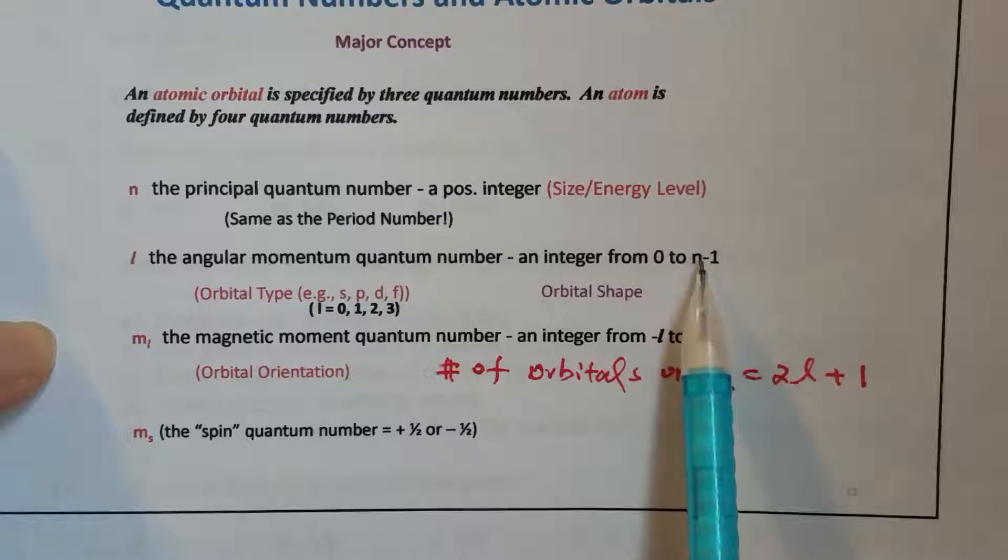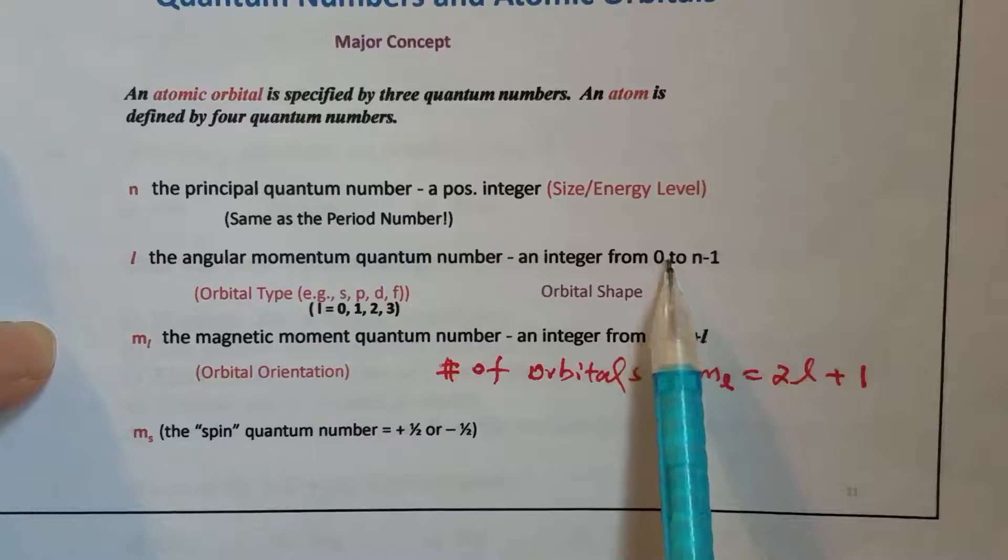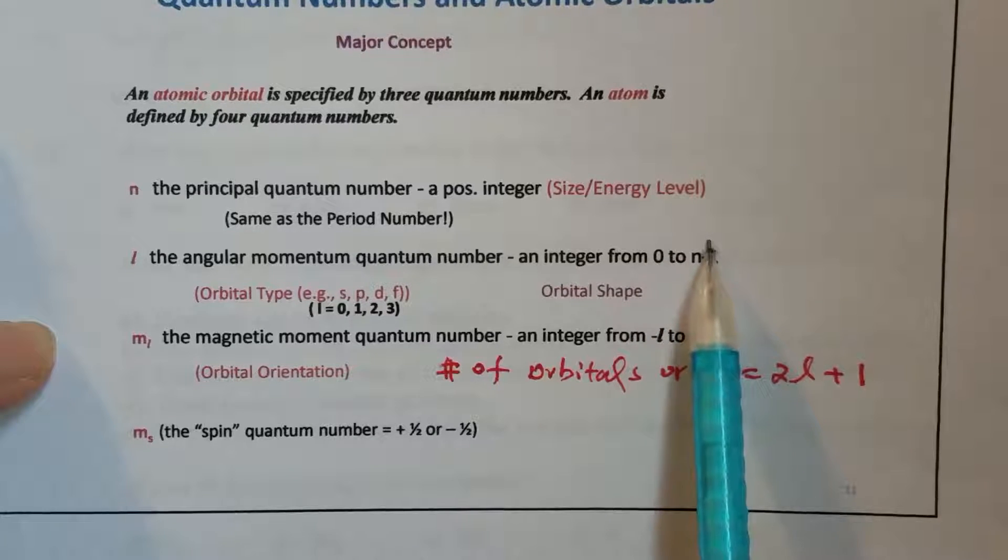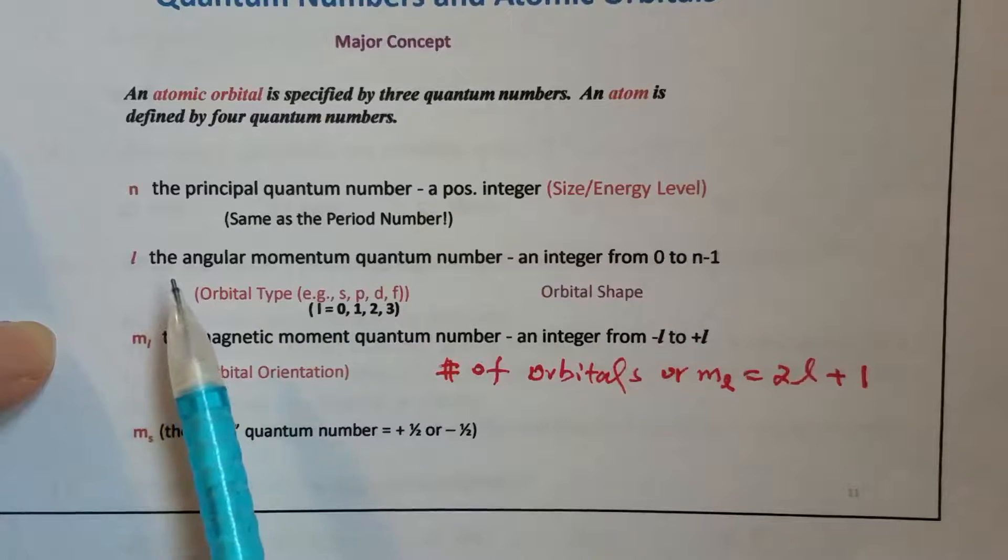Because the maximum value for l is n minus 1, and now n equals 3, so we can only have 0, 1, and 2. We will have only three l values.